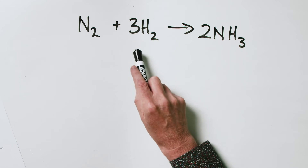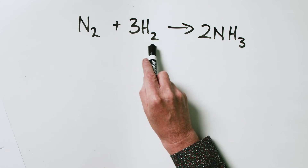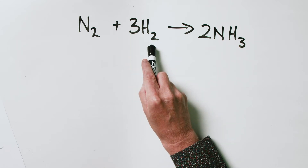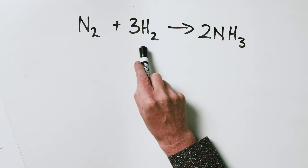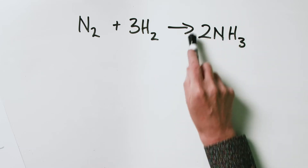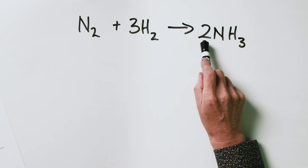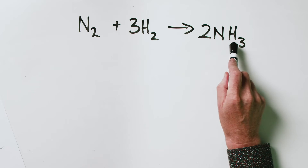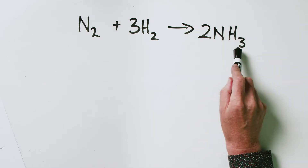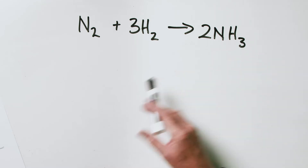On the left hand side we've got three hydrogen molecules, that's a total of six hydrogen atoms. On the right hand side we've got two ammonia molecules — again a total of six hydrogen atoms, because each ammonia molecule contains three hydrogen atoms.